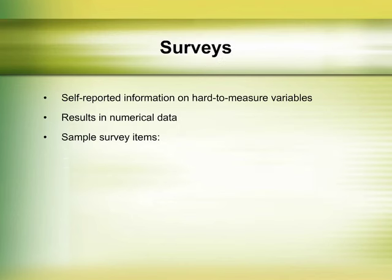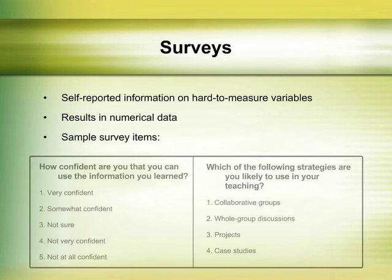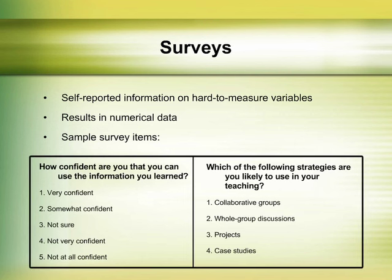Educational research often attempts to measure abstract variables such as attitudes, beliefs, and feelings. Surveys can capture data about these hard-to-measure variables, as well as other self-reported information such as demographic factors. A survey is an instrument used to collect verifiable information from a sample population. In quantitative research, surveys typically include questions that ask respondents to choose a rating from a scale, select one or more items from a list, or other responses that result in numerical data.